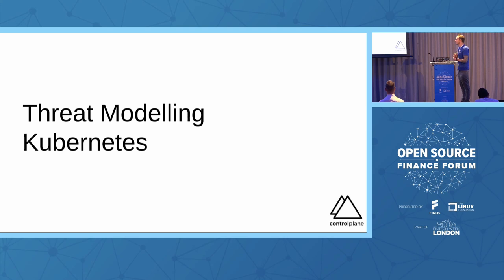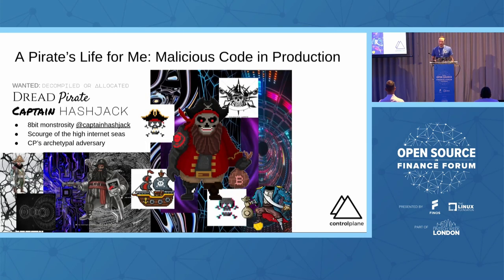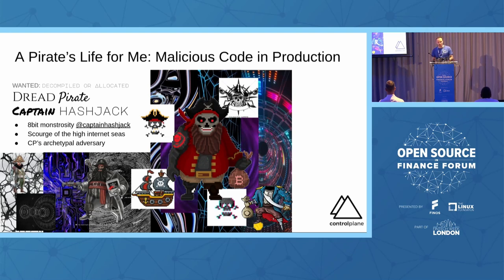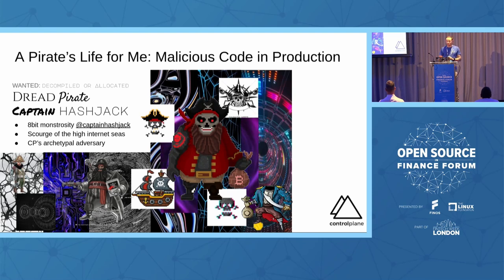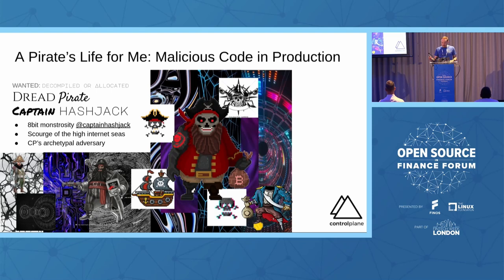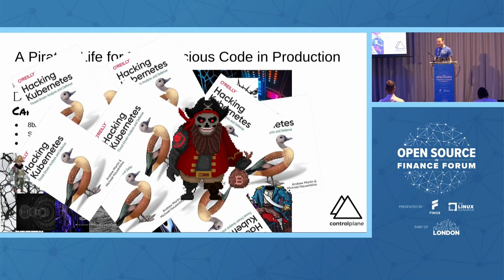Kubernetes is supposed to be wonderful. It has a great deal of complexity but can be more secure if correctly configured, well tested, and well managed. In any threat model, we first identify our adversary. In this case it is Dread Pirate Captain Hashjack — an 8-bit monstrosity, scourge of the internet high seas, and archetypal adversary. He occupies a nation-state level of criminality, analogous to Fancy Bear or APT 42 — organizations operating in the shadowy netherworld between state-sanctioned cybercriminality and private online gangstering.